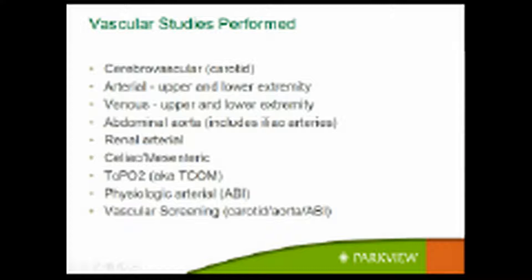The first is cerebrovascular ultrasound, most frequently called a carotid ultrasound. Next is arterial ultrasound, both upper and lower extremity. Venous ultrasound, both upper and lower extremity. The abdominal aorta, which includes the iliac arteries. The renal arterial ultrasound, which is different from a renal ultrasound — a renal ultrasound is just an ultrasound of the kidneys, most frequently done in radiology. The renal artery ultrasound looks at the arteries to the kidneys and measures the blood flow to the kidneys.